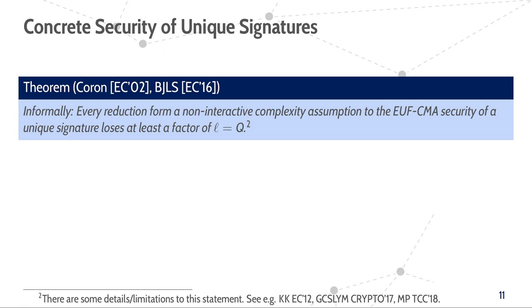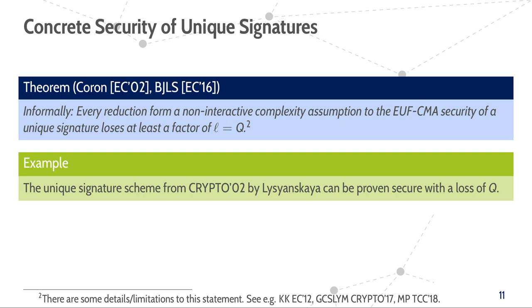Thus, let us look into lower bounds for the tightness of reductions for unique signatures. For unique signature schemes, we know that informally every reduction from a non-interactive hardness assumption to the unforgeability of the signature scheme has a loss of at least the number of signature queries of the forger, which we will denote as Q. Furthermore, this bound is tight since there are unique signature schemes that can be proven secure with such a loss under non-interactive assumptions. The unique signature scheme by Lysyanskaya from Crypto 2002 is such an example.